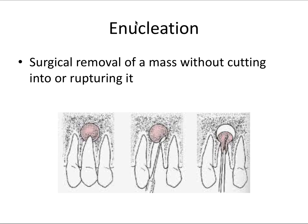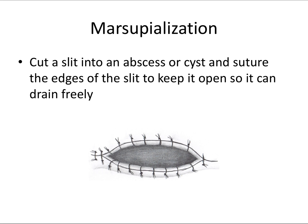Enucleation is the surgical removal of a mass without cutting into or rupturing it. Here we have what appears to be a radicular cyst. In the second slide, the tooth was removed and the lesion was removed without breaking, cutting, or rupturing it. It was removed whole, and then it could be biopsied from there if that was the treatment plan.